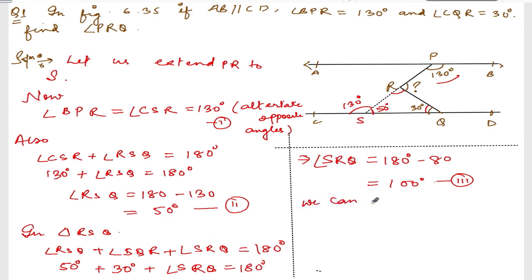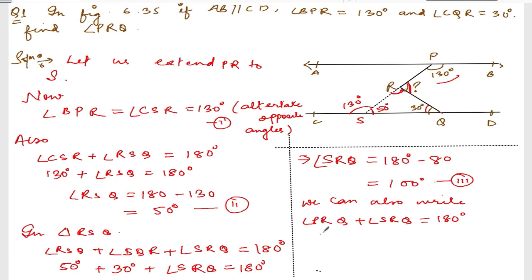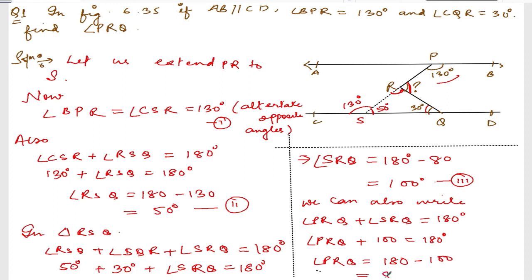Now, angle PRQ plus angle SRQ must equal 180° because they form a linear pair. We know angle SRQ is 100°, so angle PRQ plus 100° equals 180°, which gives angle PRQ equal to 180° minus 100°, that is 80°.